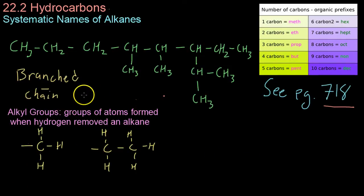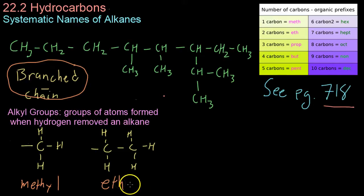Alright, now we're going to get into the complicated process of naming a branched chain alkane. And the first thing we have to do is know about alkyl groups. Now, alkyl groups are groups of atoms formed when hydrogen is removed from an alkane. So, for example, when you remove the hydrogen that used to be over there, you get, instead of methane, what is known as a methyl group. Likewise, when you remove the hydrogen from ethane, you get an ethyl group.